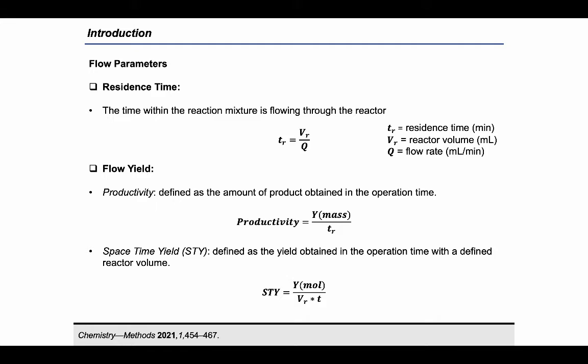Regarding the yield in flow chemistry, two new parameters can be introduced: the productivity and the space-time yield. The productivity is the mass of desired product that can be produced in a defined unit of time, while the space-time yield is generally defined as the moles or mass of product that can be produced in a defined unit of time per reactor volume.